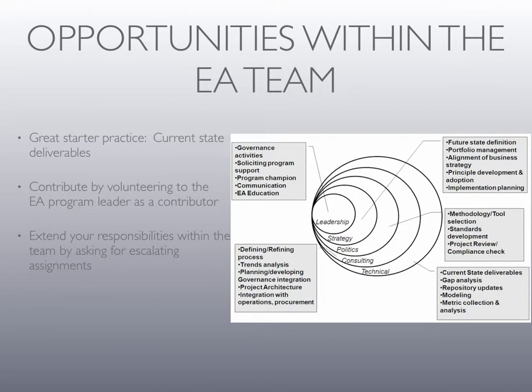The opportunities that lie within the enterprise architecture team are shown here on this diagram. This came out of my book, Zoom Factor for the Enterprise Architect, and it covers a couple of things. I help organizations figure out what the sliding scale of skills might be — where you're going to find people that come from a technical background and you're going to want to up their game so that they advance to having great consulting skills, skills around politics, around business and information technology. They become very strong in strategy and of course become great leaders.